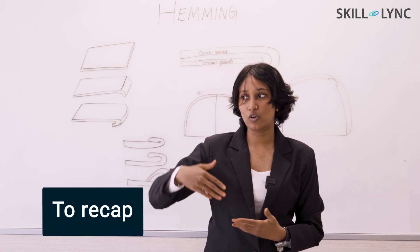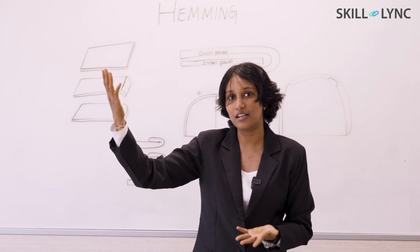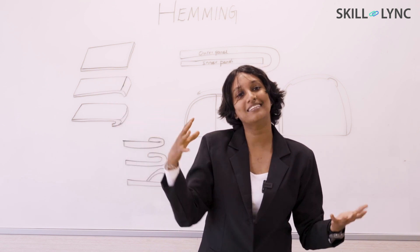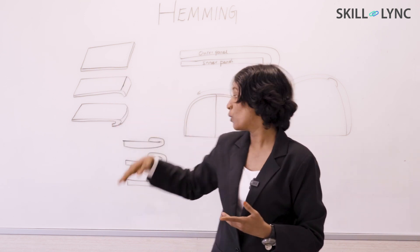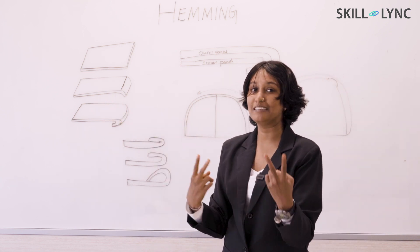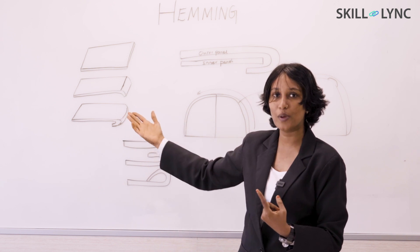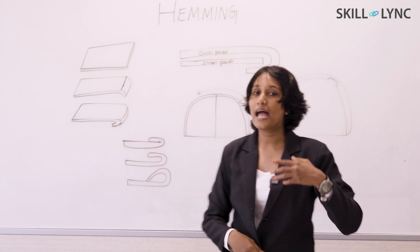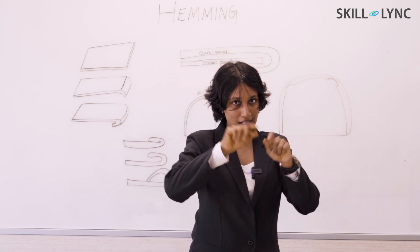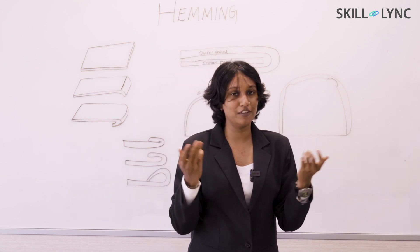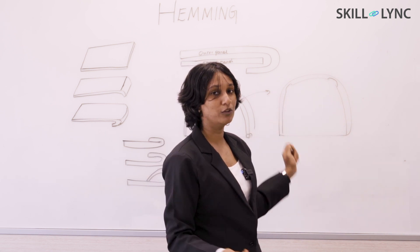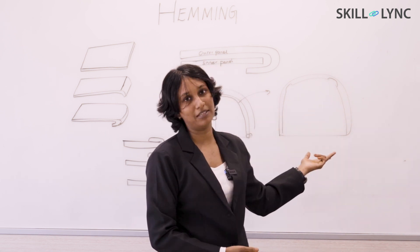So to summarize what we discussed: we covered where exactly hemming happens in real life, then hemming from the design engineering perspective, the different types of hemming, and how we do it. We looked at the two main methods — conventional and rolling hemming — and how they are applied in the automotive industry with inner and outer panels. Finally, we covered the defects that may appear during the rolling operation and how they can be rectified.